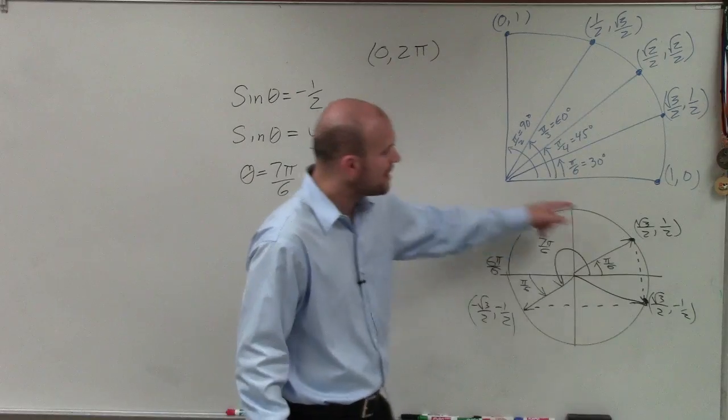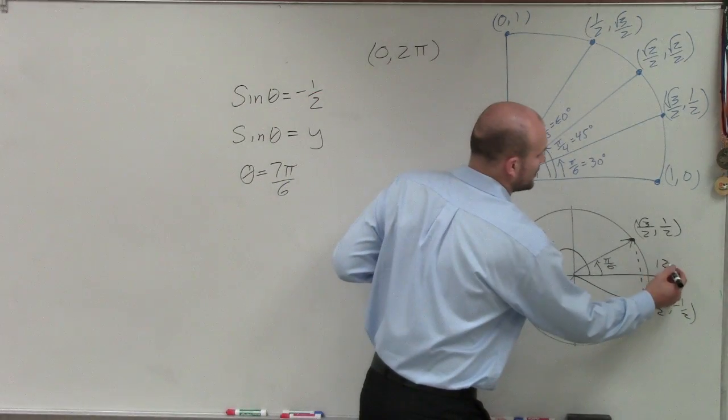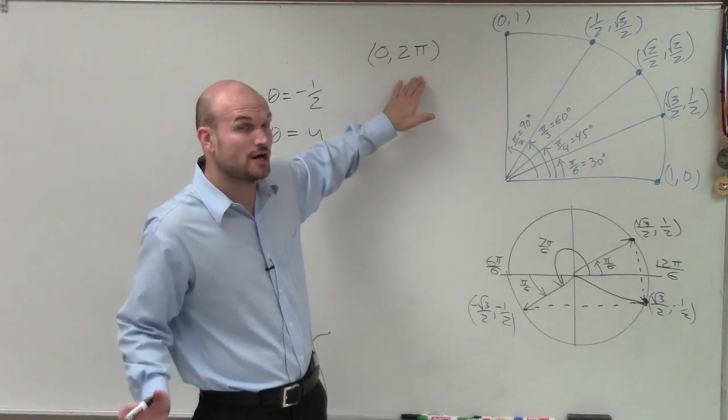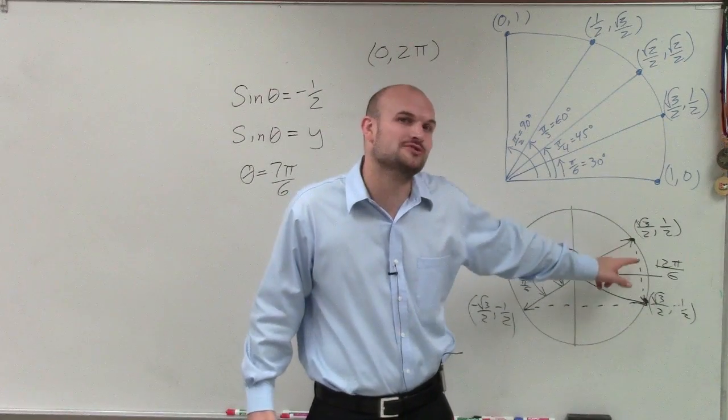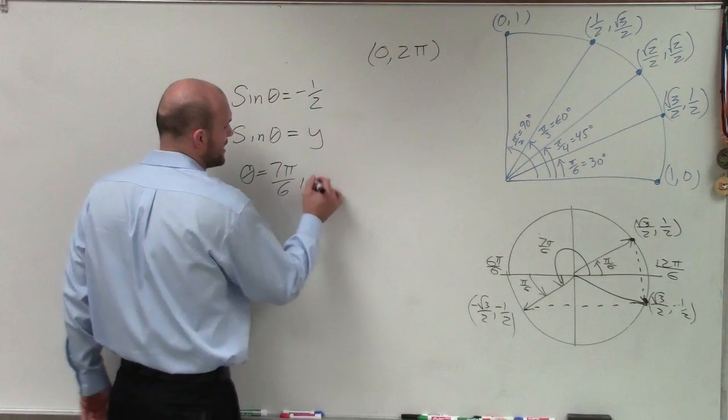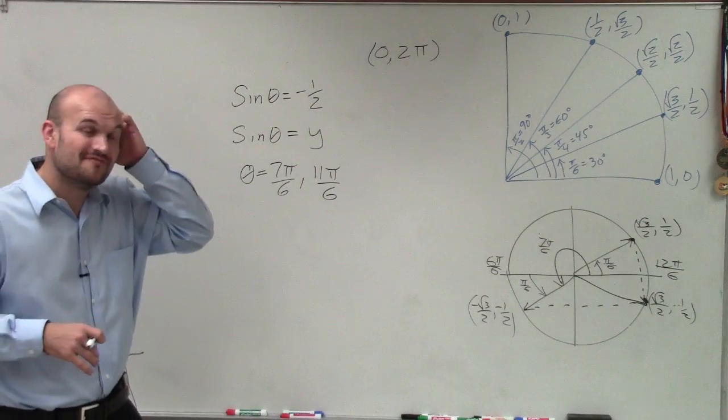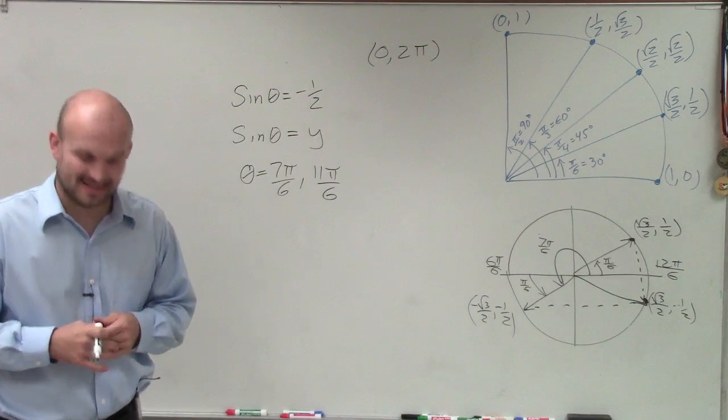And we know that the whole revolution in terms of 6, if this is 6 pi over 6, then we know a whole revolution would be 12 pi over 6, which is equal to 2 pi, our constraint. Well, this is only pi over 6 short of being 12 pi over 6. So therefore, my other angle is going to be 11 pi over 6. So there you go, ladies and gentlemen. That is how you evaluate for theta when given your value inside. Thanks.